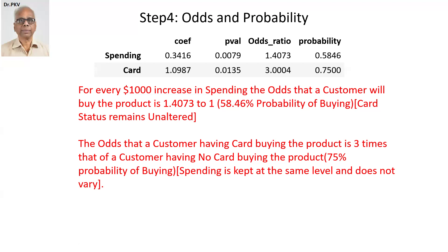This is given that the card status remains unaltered — in other words, we fix the card status and do not vary it. For every $1,000 increase in spending, the odds that a customer will buy the product is 1.4073 to 1, meaning 1.4073 times that of a customer not making the purchase. Therefore, the probability is 58.46% of buying. Odds equals probability divided by 1 minus probability. So if you increase the spending habit of a customer by an additional $1,000, the odds that he will buy is 1.4073 to 1.